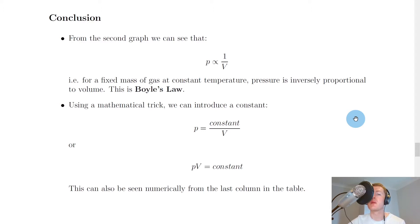From the video on Boyle's Law experiment we concluded that for a fixed mass of gas at constant temperature, pressure is inversely proportional to volume. This is Boyle's Law. This just means as volume goes up pressure goes down, or as volume goes down pressure goes up.